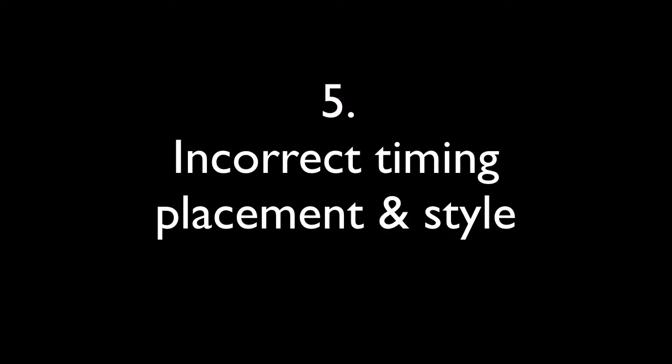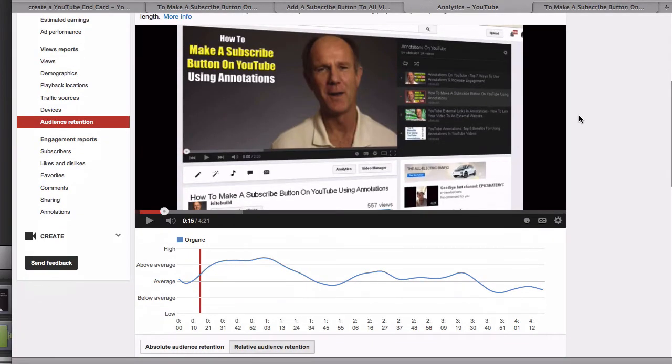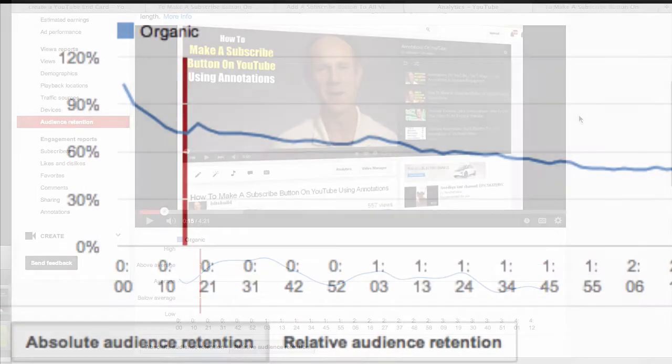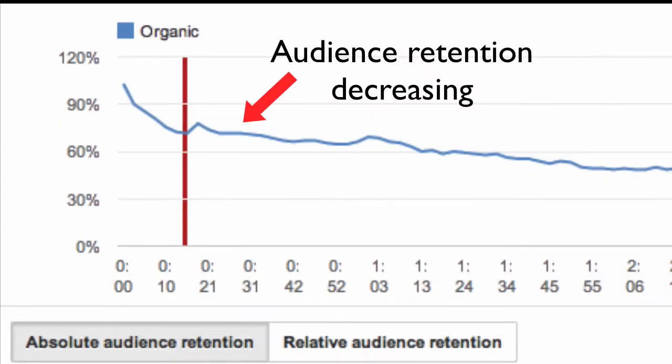Mistake 5: Incorrect timing, placement, and style. Use YouTube Analytics to view the performance of your annotations. For example, if you find that the annotation you placed at the beginning of your video stops viewers from watching the rest of your video, remove it. Now you know the top 5 mistakes to avoid when using annotations on YouTube and how to fix them.